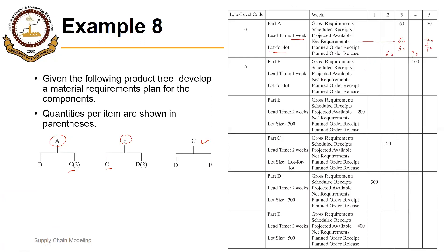Next we have F. F is an independent item, so we don't have scheduled receipts for F as well, so net requirements will be equal to 100. Lead time is one week, we have lot for lot, so we will have a planned order release in week 3. That is the case of F — simple as well.